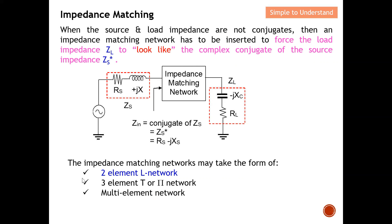There are several forms of impedance matching networks. The most common is the two-element L-network, which is simpler to design and will be covered in the next video. We can also use three-element T or pi networks, which have a shorter bandwidth but provide more degrees of control. There are also multiple-element networks available. With that, I'd like to end this discussion — please like and subscribe. Sincere thanks for your support, see you next time.